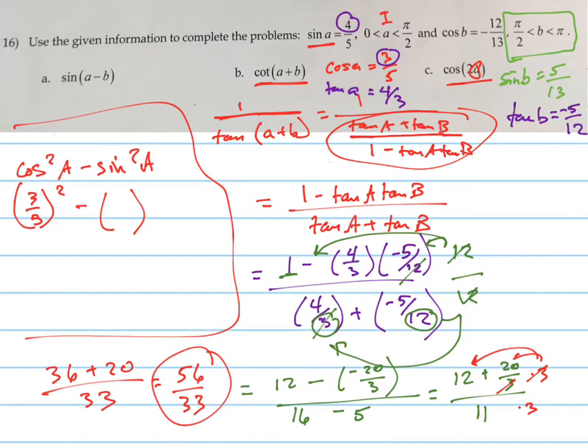What's the sine squared of A? 4 fifths, or the sine of A is 4 fifths, so we square it. So that equals 9 twenty-fifths minus 16 twenty-fifths, which equals negative 7 twenty-fifths. That one was easier. So that's C.